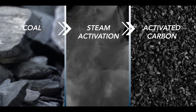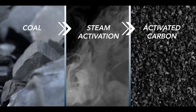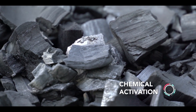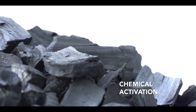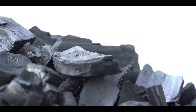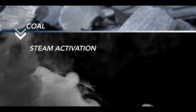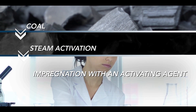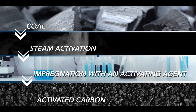Most volatile organic compounds are removed with the steam-activated carbon filter. To remove other chemical groups, activated carbon may also undergo chemical activation. This process involves impregnation with an activating agent to enhance the removal properties of the activated carbon.